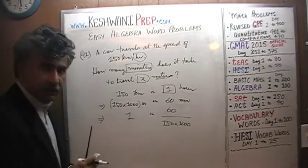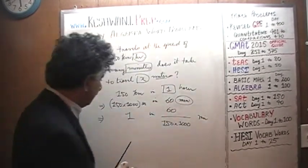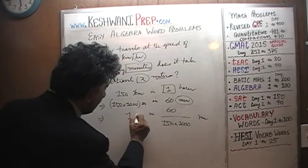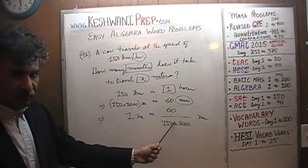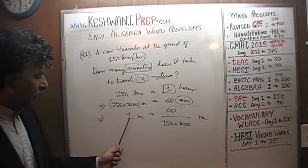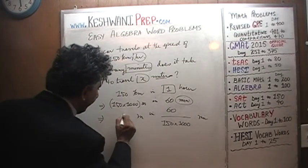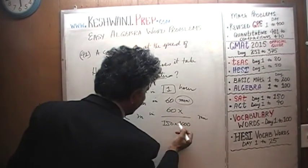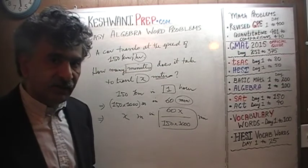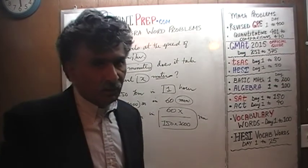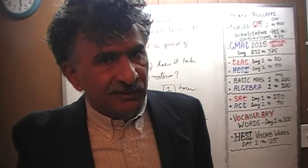If 1 meter takes this many minutes, then 2 meters will take twice as much, 3 meters three times as many minutes. We want to go X meters, so that implies X meters should take 60 times X over 150,000 minutes. We cannot leave it like this — we have to simplify it. Once you simplify it, your answer will match one of the four or five answer choices given in the exam.